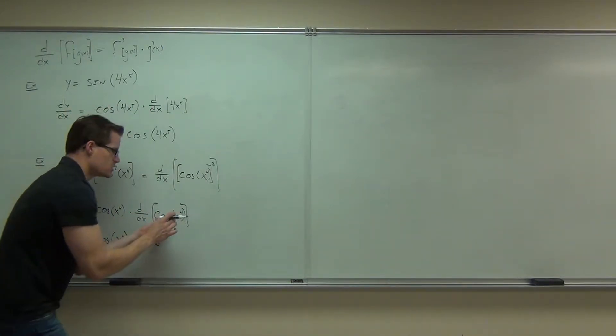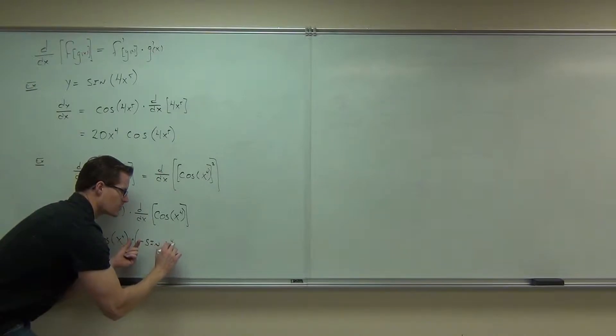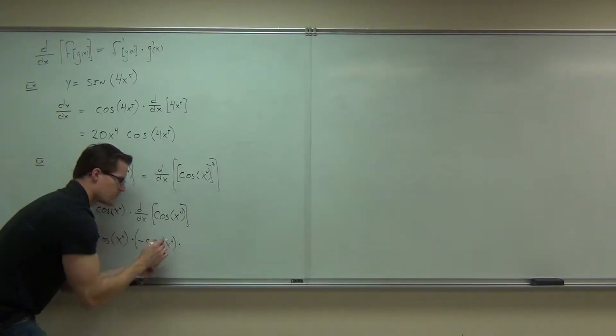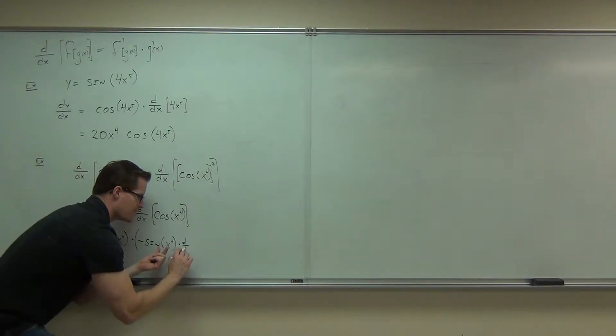Good, because chain rule says you do this, but you leave this piece alone for just a second. You leave that alone. In order to find the derivative of this, you multiply it by that.